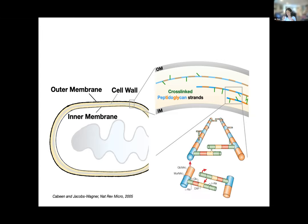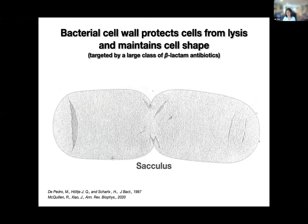The cell wall is made of long polymers of peptidoglycan strands that are crosslinked together in a mesh network — it's really one connected gigantic molecule. Those peptidoglycan strands are long polymerized sugars: two sugars in repeated units polymerized together by a specific polymerase — you can think of it like a DNA strand being elongated by DNA polymerase, but here we have the peptidoglycan polymerase. Specific enzymes also crosslink the peptide stems from the di-sugar units.